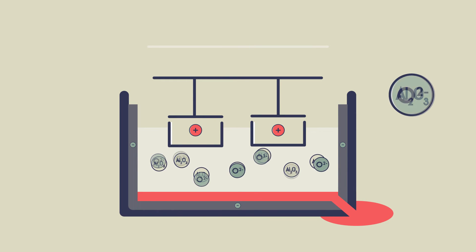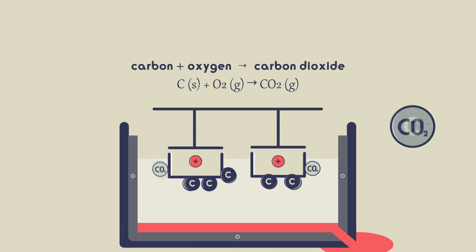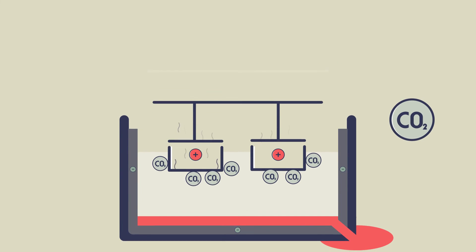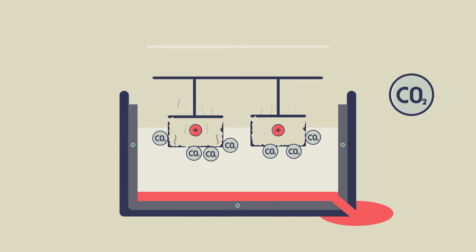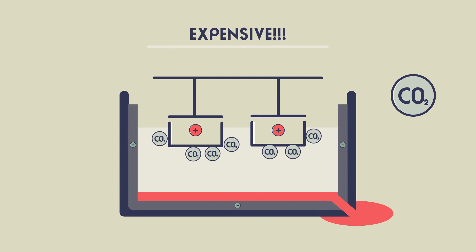The oxygen from the aluminium oxide in the cryolite forms at the positive anodes. The oxygen reacts with the carbon of the graphite, forming carbon dioxide. The positive anode therefore burns away and needs replacing regularly. This is another reason for the extraction of aluminium being so expensive.